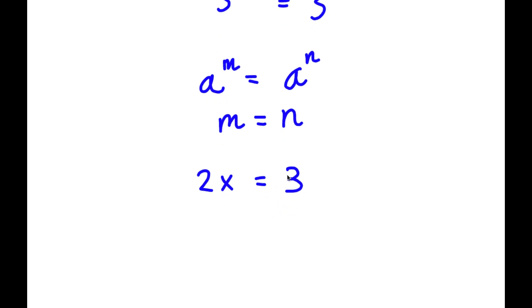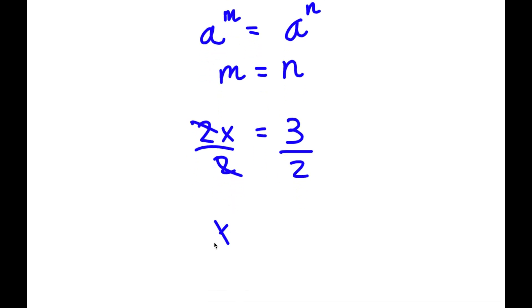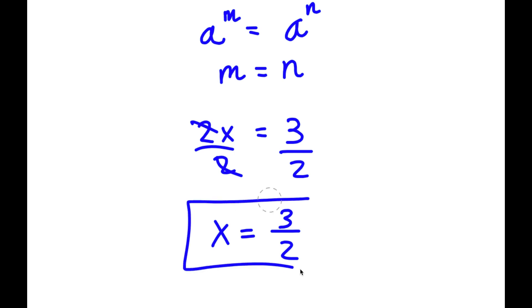To solve this equation, all I have to do is divide both sides by 2. These two cancel out, and I have x is equal to 3 over 2. So this is my answer.